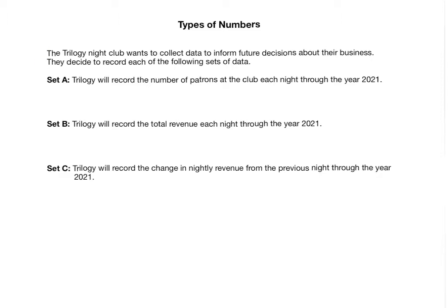Here's the example. The Trilogy nightclub wants to collect data to inform future decisions about their business. They decide to record each of the following sets of data. Set A: they want to record the number of patrons at the club each night through the year 2021. What are potential numbers that make sense in this scenario? Could there be 17.82 people in the club on a particular night? Absolutely not — a decimal doesn't make sense. Could there be negative 300 people? That doesn't make sense either. So this could be anywhere from 0, 1, 2, 3, 4, all the way up to their max — say 500 — but specifically just those whole numbers. Not 3.78; that doesn't make sense.